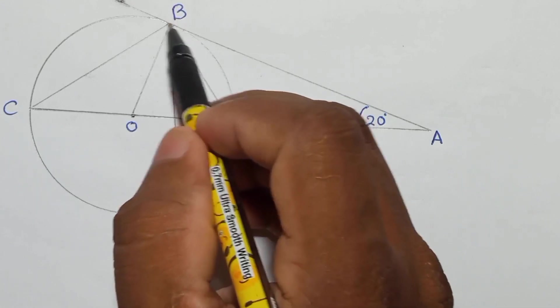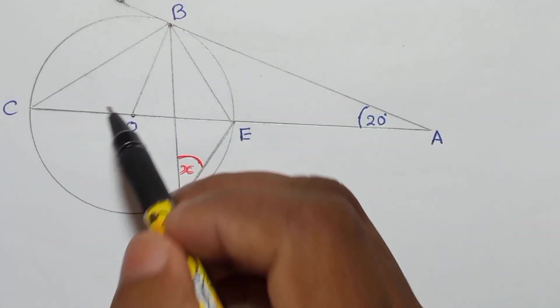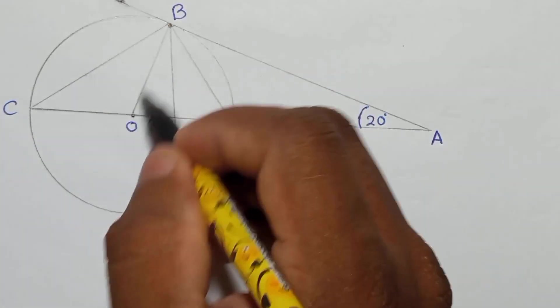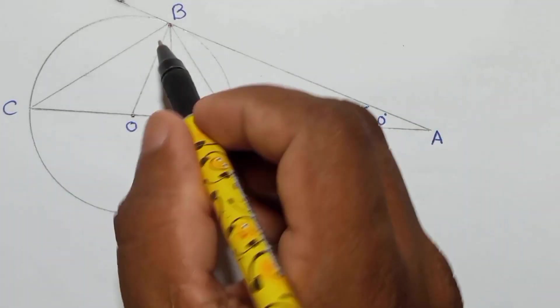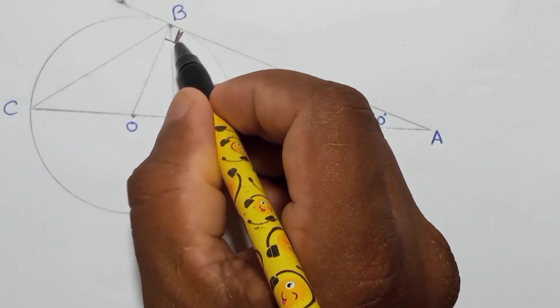B is a point on the circumference, so this is the radius. We learned a theorem that the angle between the radius and the tangent must be 90 degrees. Here should be 90. This should be 90.